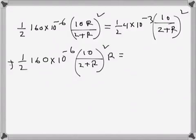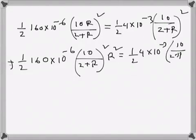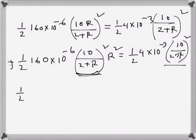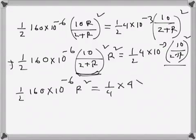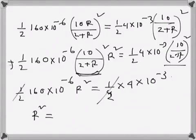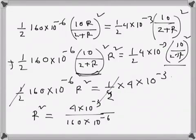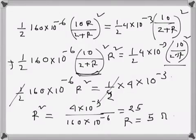We can take R squared out. Since 10 over 2 plus R is not zero because R is a positive value, we can divide both sides by that term. This gives us 160 times 10 to the power minus 6 times R squared equals 4 times 10 to the power minus 3 over 4, which simplifies to give R squared equals 25. So R equals 5 ohms — that should be the value of R.